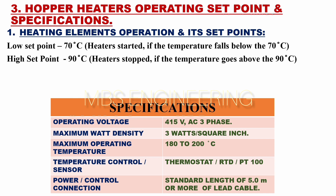The maximum operating temperature is 180 to 200 degrees Celsius. For temperature control, sensor heating elements such as thermostats, RTD, or PT100 are used for temperature transmitter and control purposes. Regarding power and control connection, the power and control cables are supplied with a standard length of 5 meters and more based on requirements.